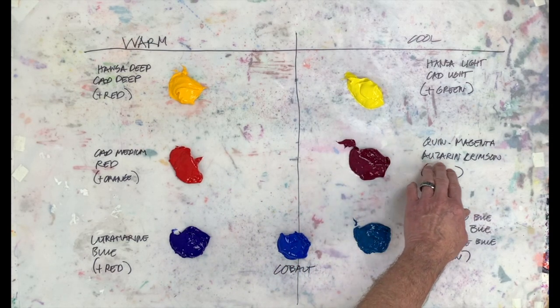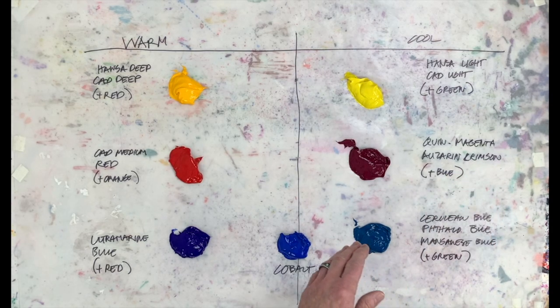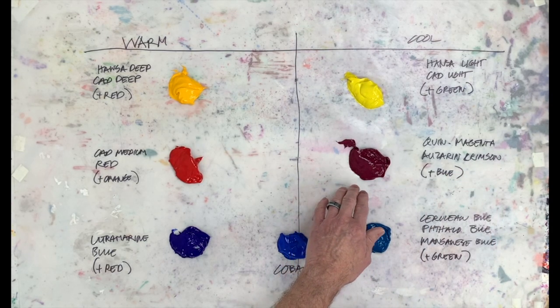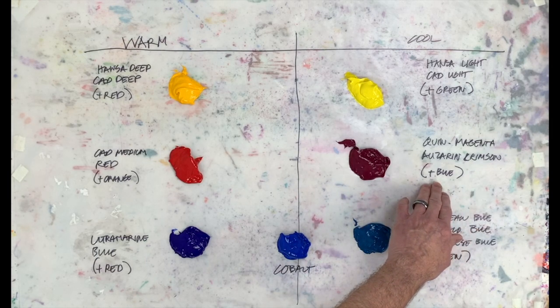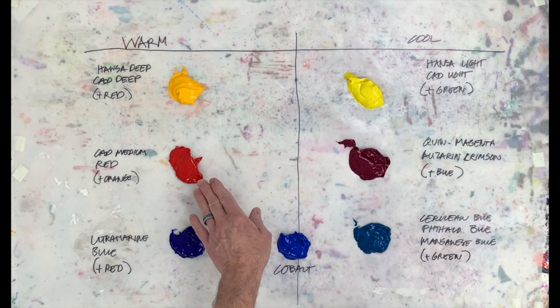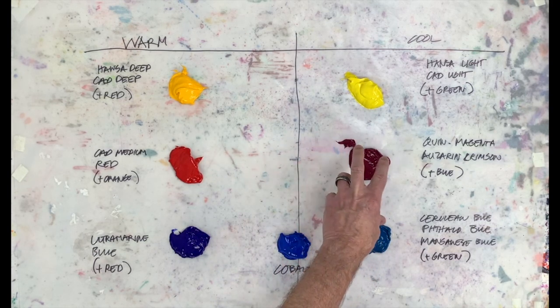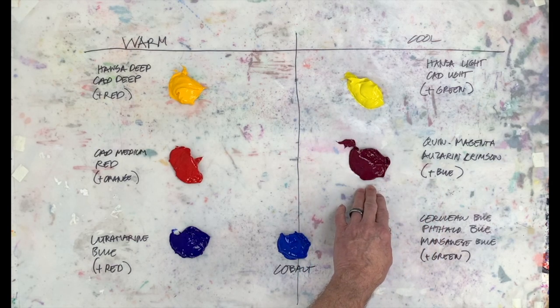This is a very stark contrast between the cooler red, and this is quinacridone magenta, but it could also be alizarin crimson, another common cool red that almost every manufacturer makes. It's cooler because it has the addition of blue in it. You can tell this is more toward violet than this red is because it has more blue in it. Red plus blue makes violet, so it's closer to violet.